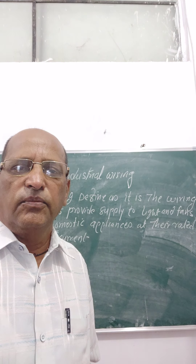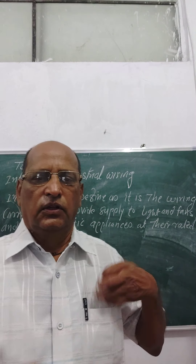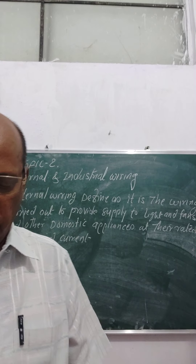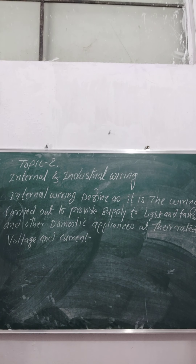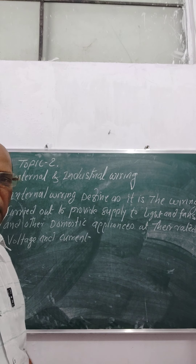Today I start topic number 2: Internal Wiring and Industrial Wiring. It starts with the definition phase. The definition is written on the board — you can note it down. Internal wiring is defined as the wiring carried out to provide supply to lights, fans, and other domestic appliances at their rated voltage and current.